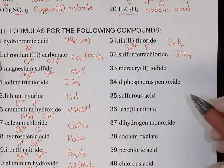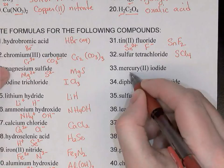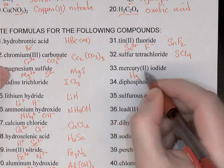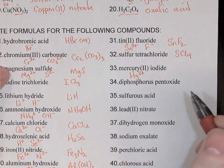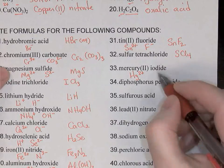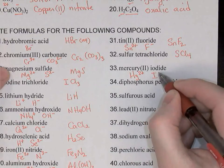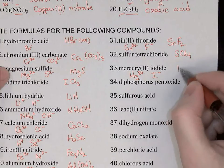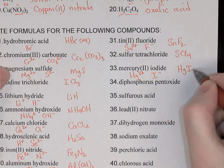Mercury(II) iodide: mercury is Hg, and mercury(II) means Hg²⁺. Iodide is a halogen, so I-. Therefore HgI2.